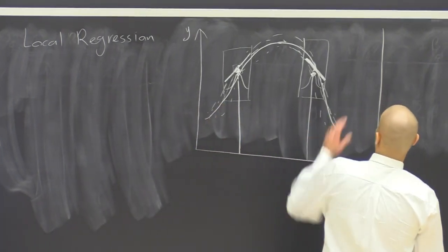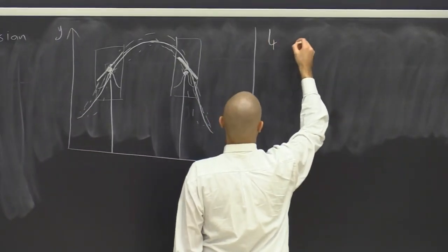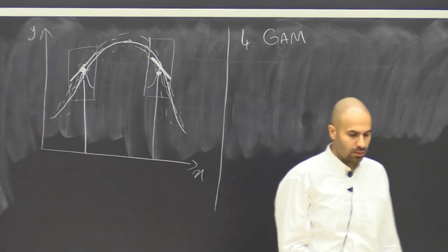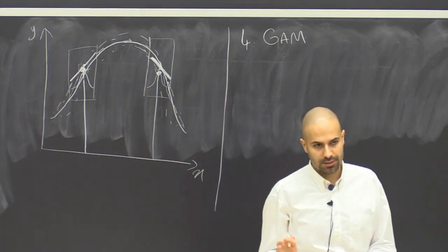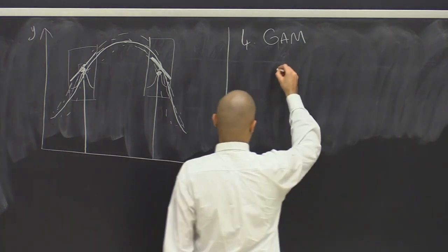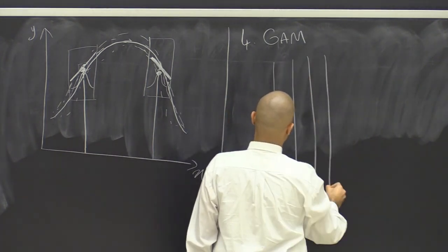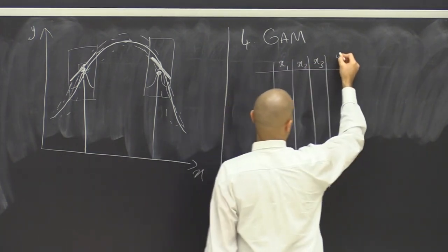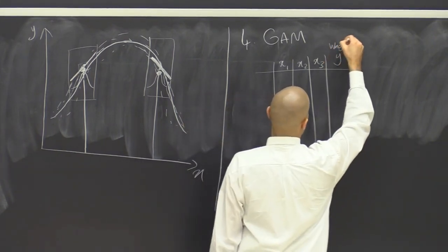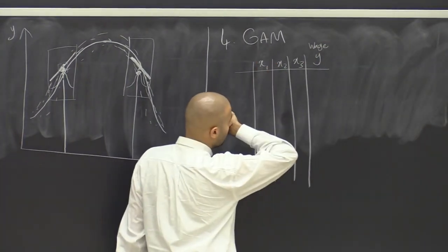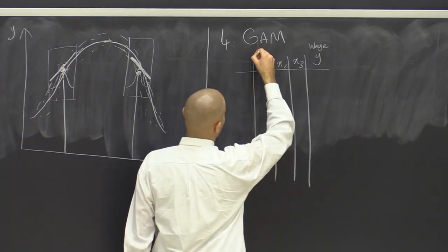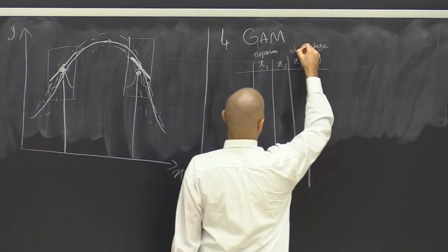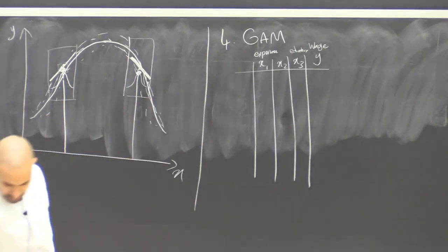All right, so the last topic is generalized additive model or GAM. With generalized additive model, what we want to do is using different functions for different predictors. So let's say that we have a data set like this. We have some x1, x2 and x3, these are different predictors, and we have y. So let's say y is wage, x1 is maybe the experience, x3 is the level of education, and x2 is age.